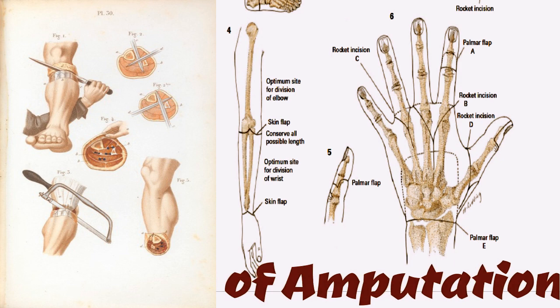The tourniquet is placed above the knee for amputations of the lower leg and foot, high in the thigh for amputations of the knee and lower thigh, and above the elbow to control the brachial artery for major amputations of the forearm. In cases of arteriosclerosis, the tourniquet should not be used because of the possibility of damaging the blood supply to the stump. Sterile elastic bands may be applied to the base of the digit for minor amputations.